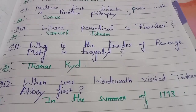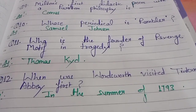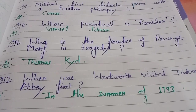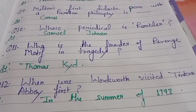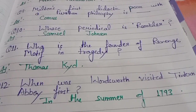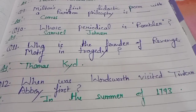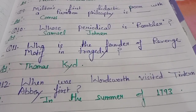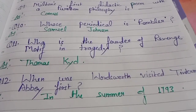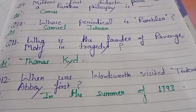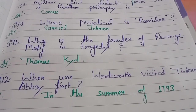When did Wordsworth visit Tintern Abbey for the first time? The answer is in the summer of 1793. William Wordsworth visited Tintern Abbey for the first time in the summer of 1793. Sometimes the question also asks which season — so the answer is summer. He had first gone to France in 1790 and returned to England in December 1792, after which he visited Tintern Abbey in the summer of 1793.